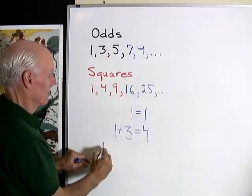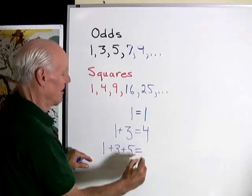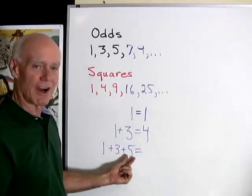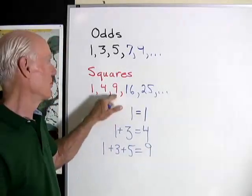Let's add the first three odd numbers. 1 plus 3 plus 5. What do we have? 4 plus 5, 9. No coincidence, that's the third number in the sequence of squares.